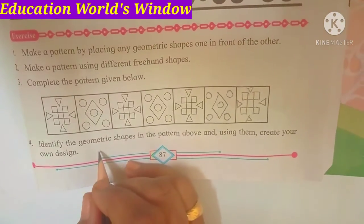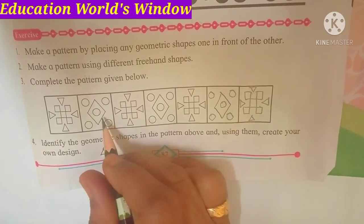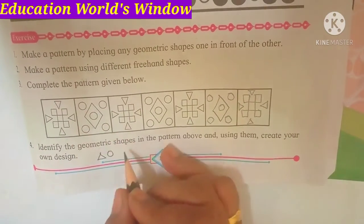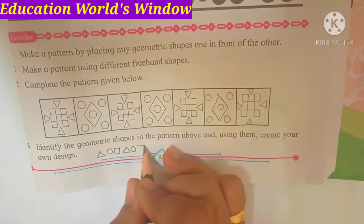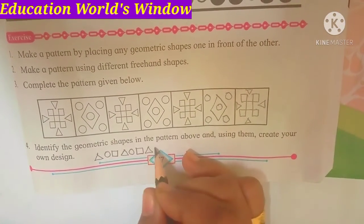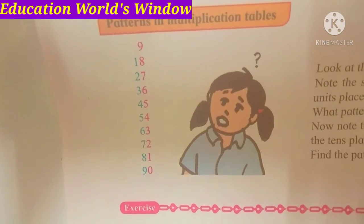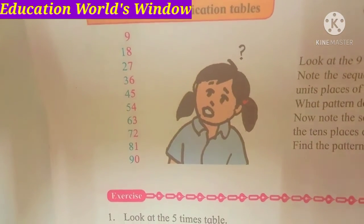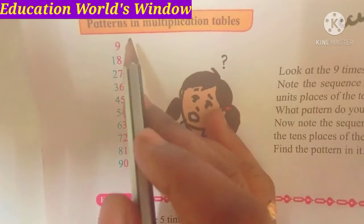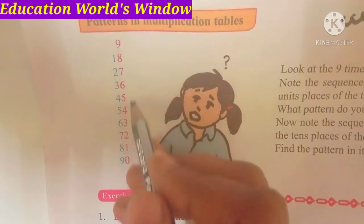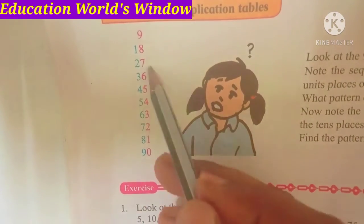The geometric shapes are made of new patterns. How can you make this pattern? For example: triangle, circle, circle, triangle, circle, square, triangle, circle, square, triangle, circle and square. This is the same pattern. Now, to describe the pattern design, there are numbers in the pattern. What are the patterns in multiplication tables? There is a table of nine.